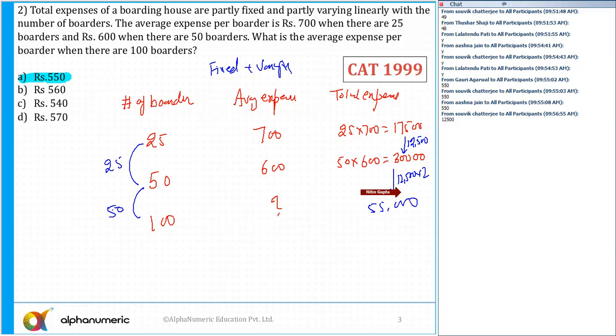So the average expense is nothing but 55,000 upon 100 which is equal to 550 and that is the answer. So the correct answer is option number B.